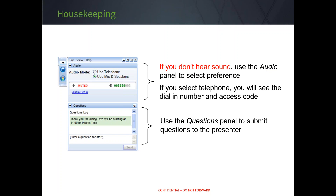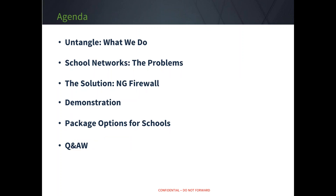Just a few housekeeping rules before we get started. If you have any audio issues please just be sure that you select the correct audio preference on the right-hand side. If you do select to dial in and use the phone you will need to use the access code that's provided. Just a reminder — this webinar is being recorded so you will have the option to rewatch and revisit areas that you want to come back and follow up on. We also have a few of our team members on today to help answer questions so please just submit them in the Q&A box, and if we don't end up getting to your question please just send any questions to sales@untangle.com. With that I'm going to pass it over to Katie.